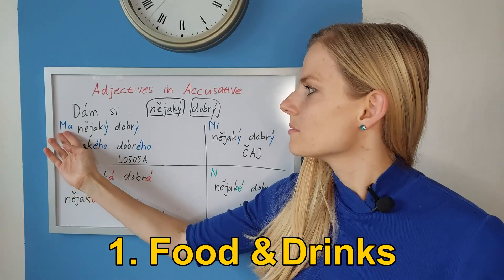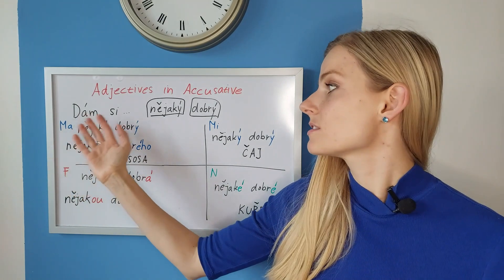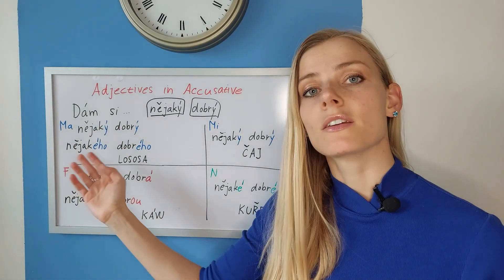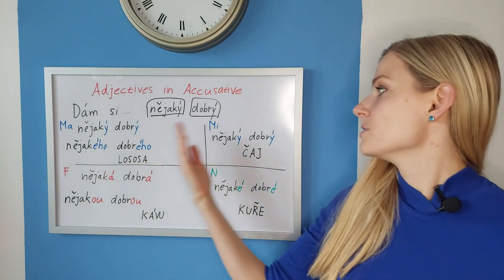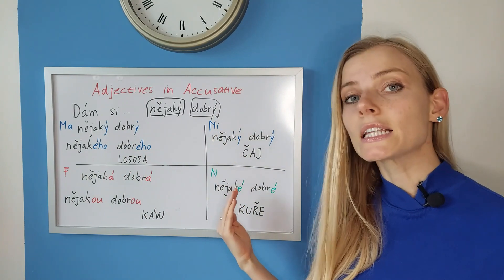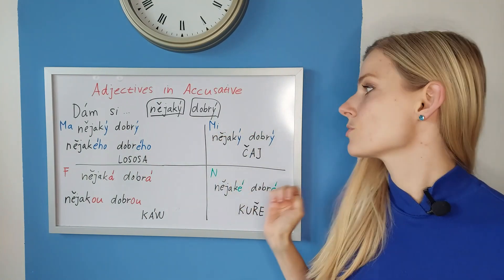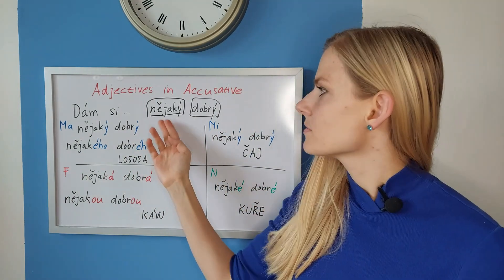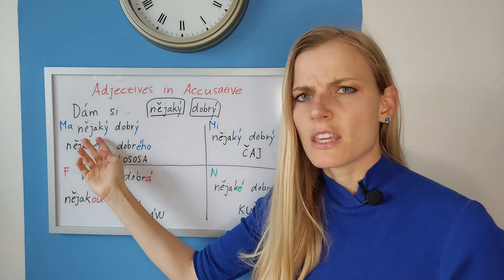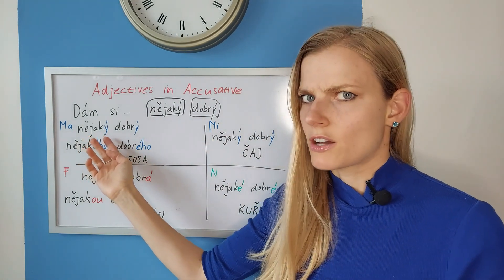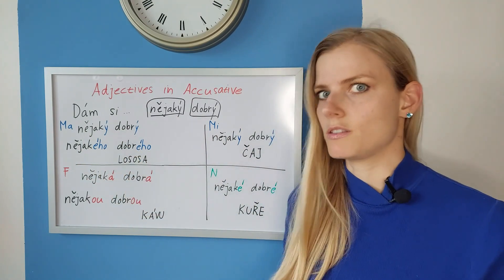Masculine animate is the one that changes. Feminine is also the one that changes. The right side — masculine inanimate and neuter — stays exactly the same for nouns and for adjectives too. We have nějaký and dobrý. By the way, nějaký is actually a pronoun in Czech but it follows exactly the same rule.